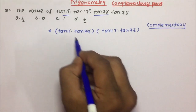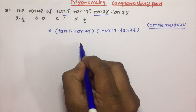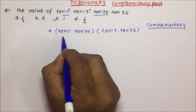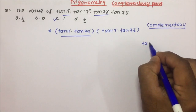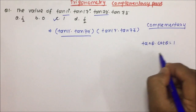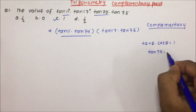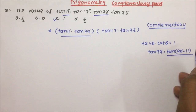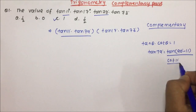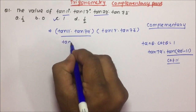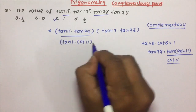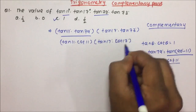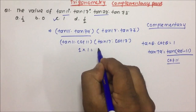Without doing anything, the answer will be nothing but 1. Let's see: tan 11 × tan 79. As we know, tan 79 degree, I can also write as tan(90 − 11). Tan(90 − θ) will be equal to cot θ, so cot 11 degree. So here tan 11 × cot 11, and here tan 17 × cot 17. So tan θ × cot θ will be equal to 1, and 1 × 1 will be equal to 1.